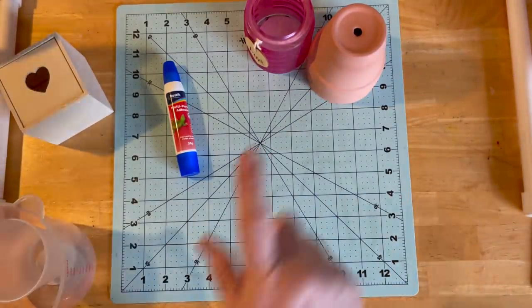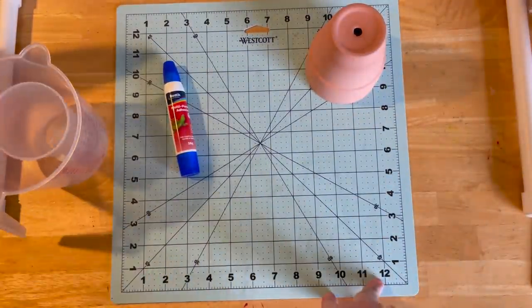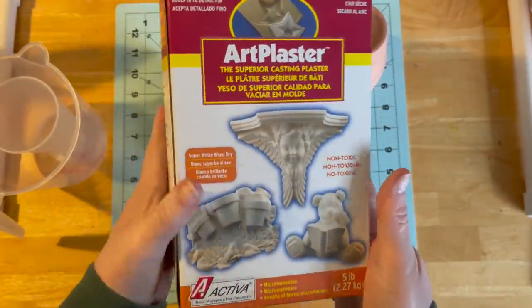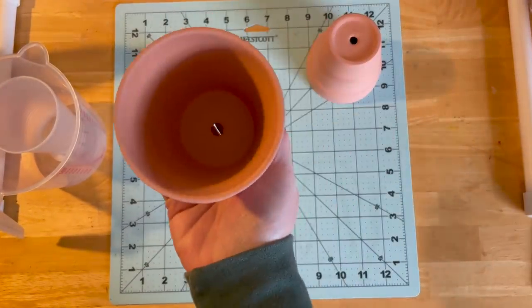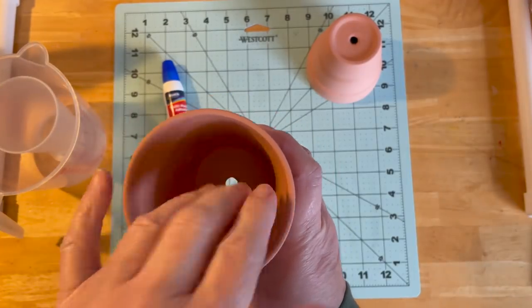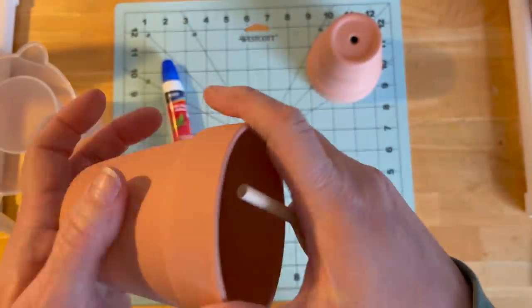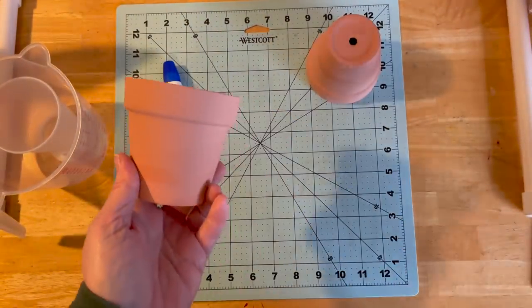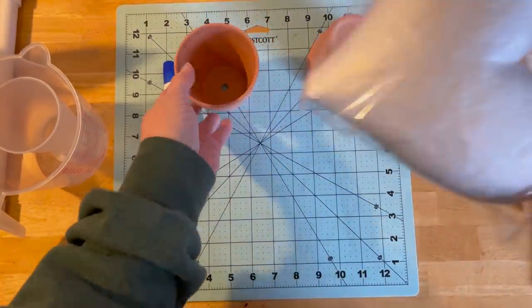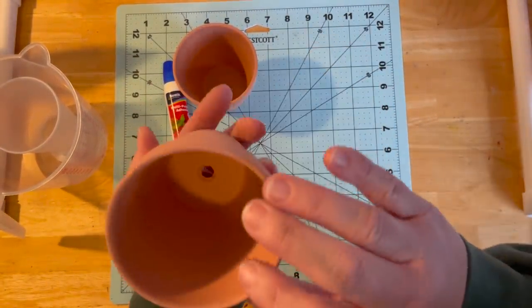You're gonna need something for stability. I'm using plaster of Paris - it sets up quick, it's heavy, and it's gonna give my base stability. If you don't have plaster of Paris you could fill the bottom with rocks and then put some foam in the top and glue your stick in there, or just put foam in and use adhesive. But because this is big and has height, I'm gonna go with plaster of Paris.